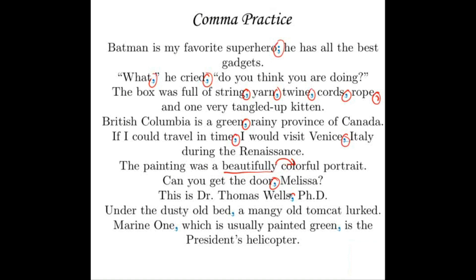"This is Dr. Thomas Wells, Ph.D." — we put a comma before Ph.D., and if the sentence had gone on afterwards, a comma after it too. Ph.D. is an academic title. Next: "Under the dusty old bed, a mangy old tomcat lurked." We have a phrase of more than three words — "under the dusty old bed" is five words — so we definitely need the comma before the main sentence. Finally: "Marine One, which is usually painted green, is the president's helicopter." Marine One is already uniquely identified — there can only be one helicopter with that name — so the fact that it's usually painted green is non-essential information, and we set it off with commas.